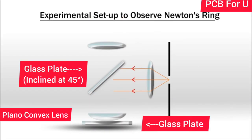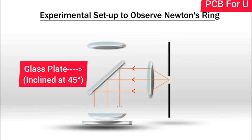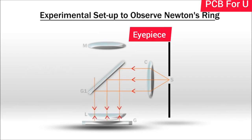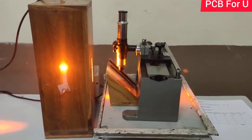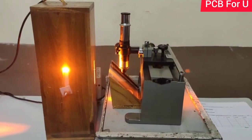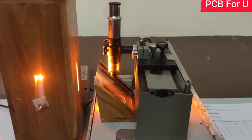Consider a slit in which sodium vapor lamp is illuminated through the slit. The ray is coming towards the convex lens. Parallel beam of light is incident on the glass plate which is inclined to 45 degrees towards the plano-convex lens on the glass plate.